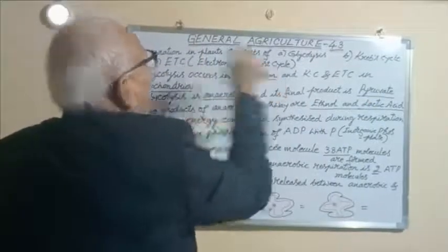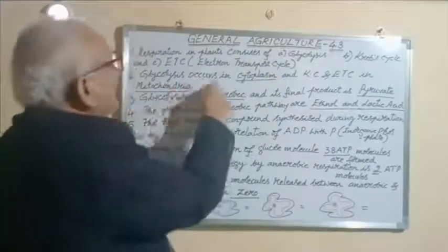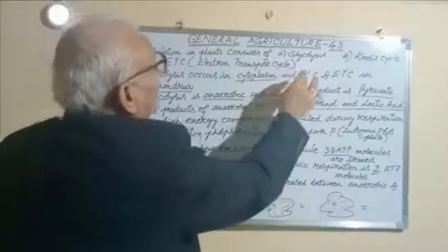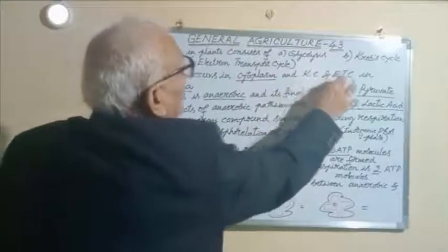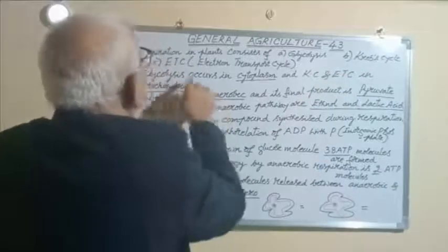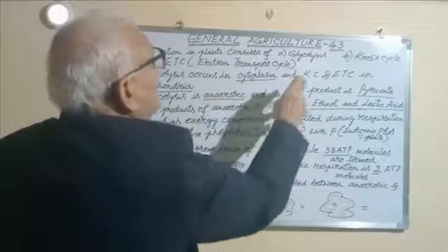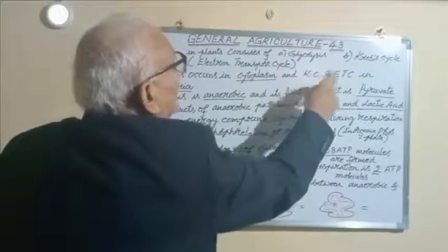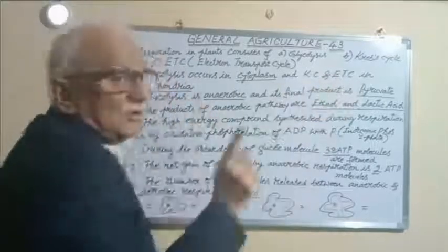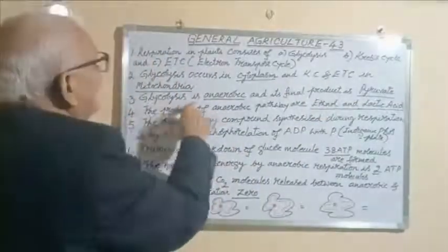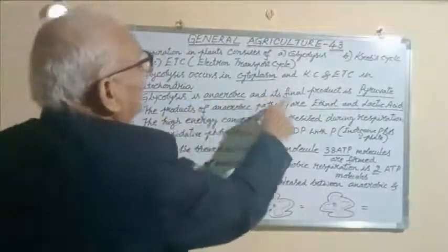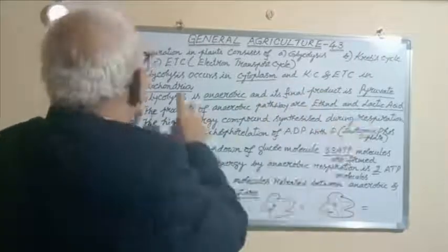Glycolysis occurs in cytoplasm, and Krebs cycle and electron transport cycle occur in mitochondria. Glycolysis is anaerobic and its final product is pyruvate.